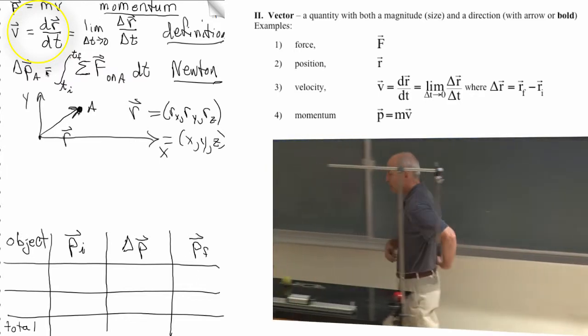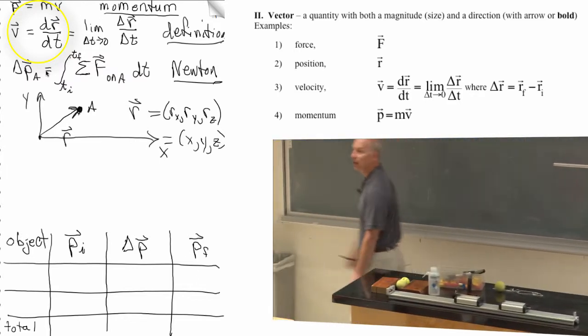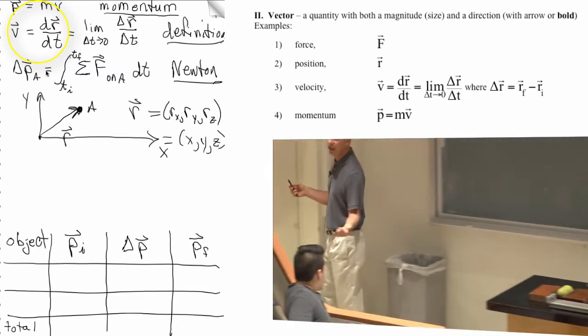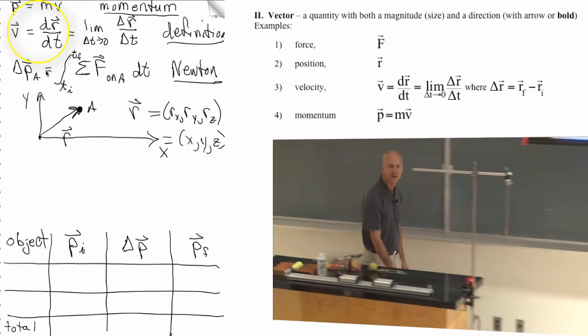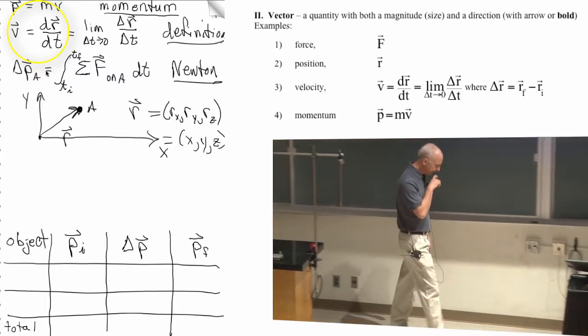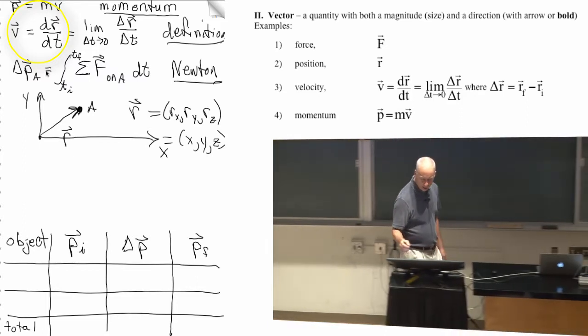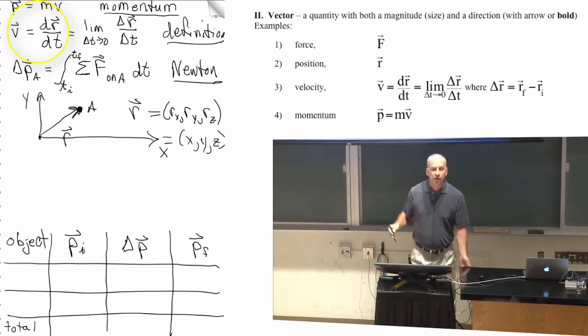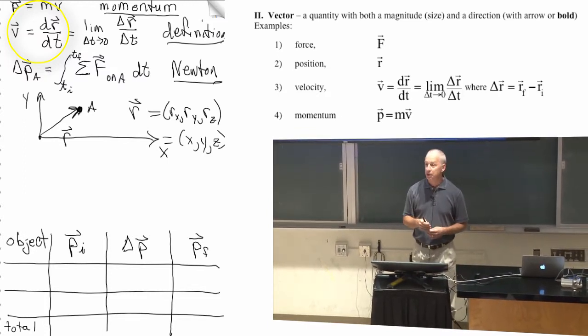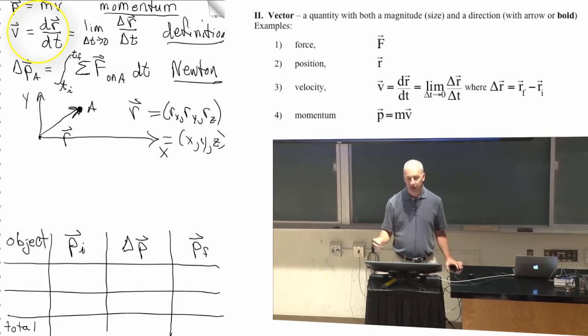Right now, my center of mass is moving east, essentially at a constant speed. Now I'm moving west, essentially at a constant speed. So the rate of change, my position vector is changing. My location is changing. The rate of change is what we call a velocity.